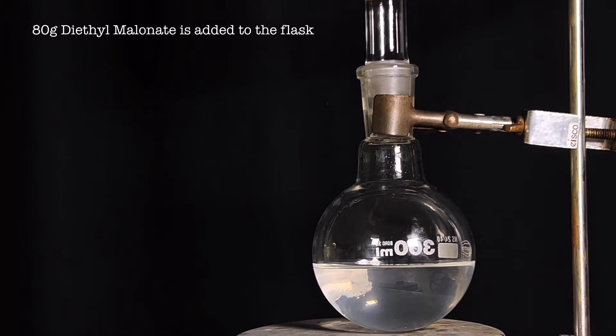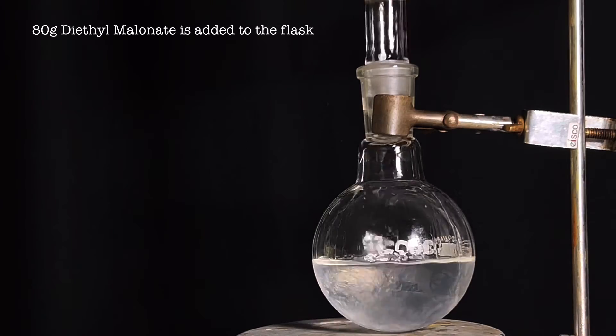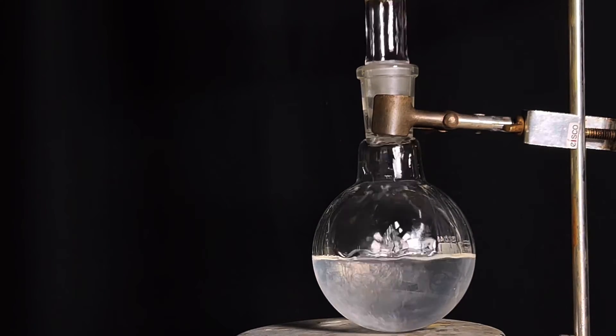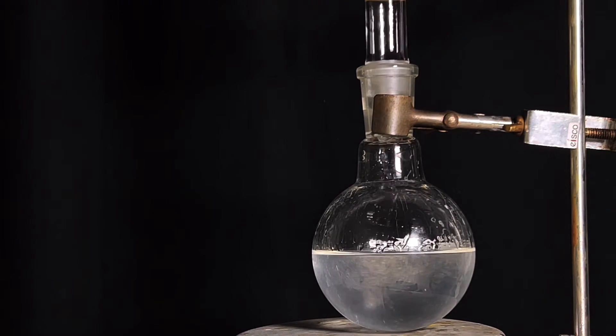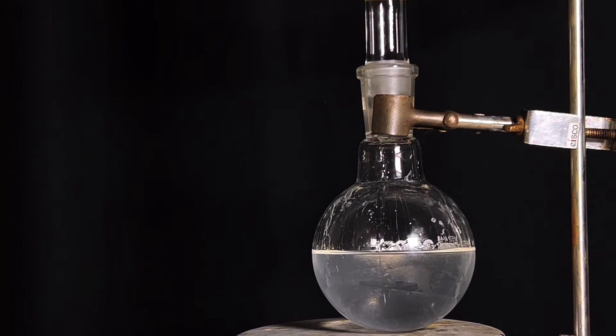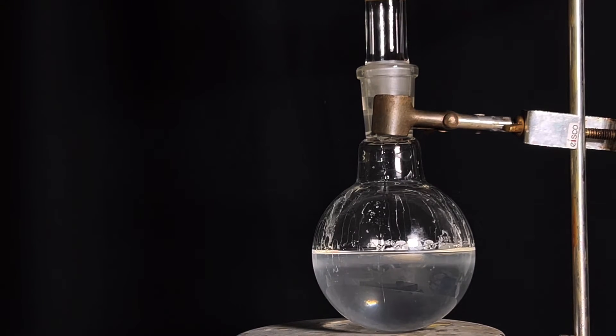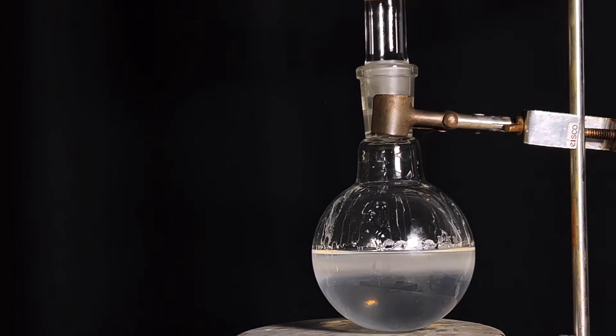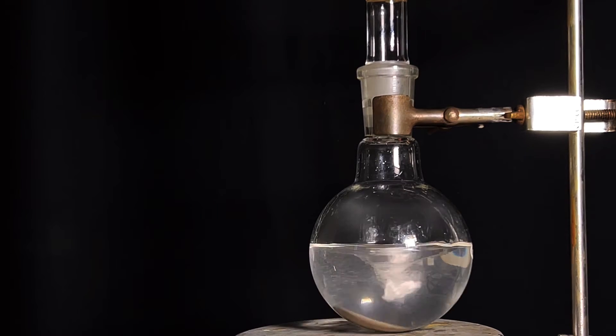When all the sodium has completely reacted, 80 grams of diethyl malonate was transferred from the top of the condenser. I bought the diethyl malonate from chemical supplies. If you cannot get it, you could synthesize it by Fischer esterification reaction between ethanol and malonic acid, with a link in the description. The diethyl malonate stays as a separate top layer in the flask, so I added a stirring bar and stirred the reaction mixture.